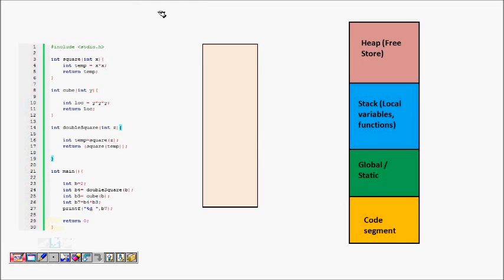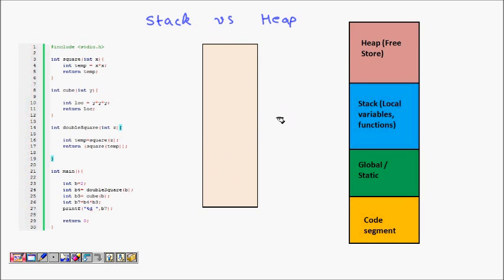In this lecture we are going to learn about memory management in C — basically how your code uses memory. We will learn about two kinds of memories: one is the stack and another is the heap. When you write a piece of code, the memory assigned to it includes a code segment where all your instructions are stored, and a global/static section where global and static variables are stored.